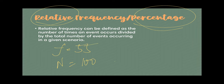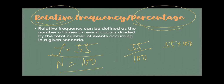So if a certain value's frequency is 55 and the total number of people in the data set is 100, we do 55 divided by 100, which is 0.55, times 100, and that's 55%. This is easy to compute when your denominator is 100, but of course it's going to be a little bit difficult when it's not a round number.